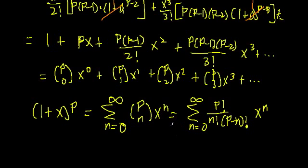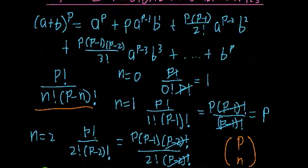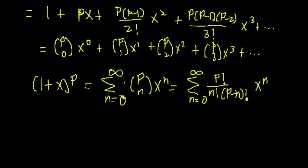You may be saying: this is supposed to be similar to the binomial theorem, but with the binomial theorem when p was a positive integer we had a finite series — it ended. But here we have an infinite series. Well, this is the most general case. When p is a positive integer, this series will terminate and not go to infinity. But this expression also covers cases where p is negative or a fraction, and in those cases we have an infinite sum.